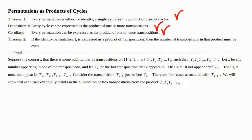Consider the transposition t_{k-1}, just before t_k. There are four cases associated with t_{k-1}, and we will show that each case eventually results in the elimination of two transpositions from the product t₁ through t_m.